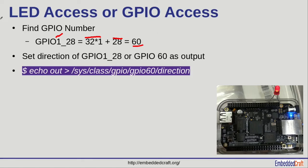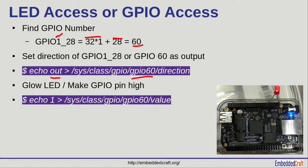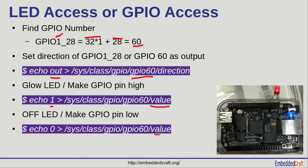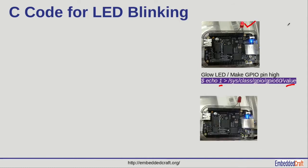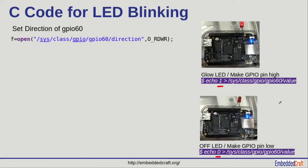The next step is setting the direction of GPIO 60. We will write 'out' to the GPIO 60 direction file. To glow the LED, we write 1 to the value file. Similarly, writing 0 to the value file will switch off the LED. Basically, writing 1 to value will glow the LED and writing 0 will switch it off. Let us see the code for LED blinking.